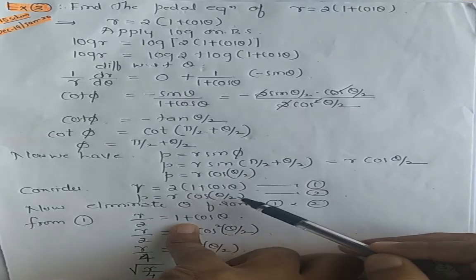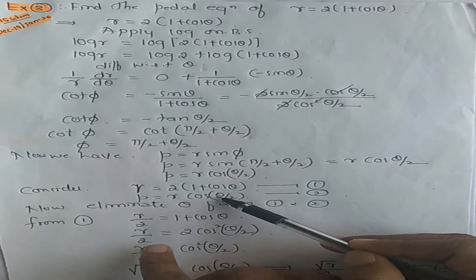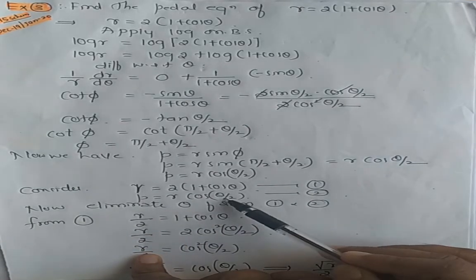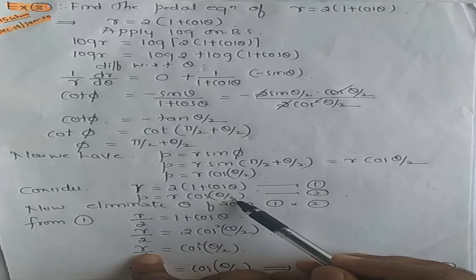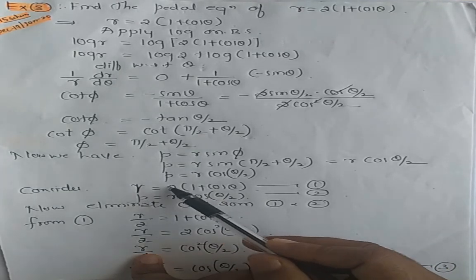So you consider the given curve and you consider what you got here. Call it as equation 1 and 2. Now your aim is to eliminate theta from these two. Eliminate theta from 1 and 2. How to eliminate? You can take any one of these two equations.